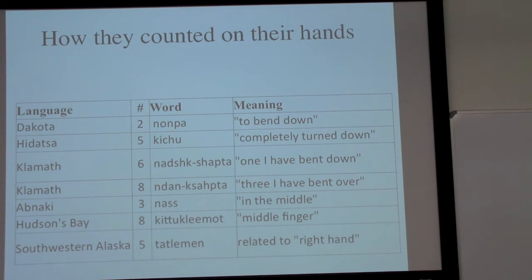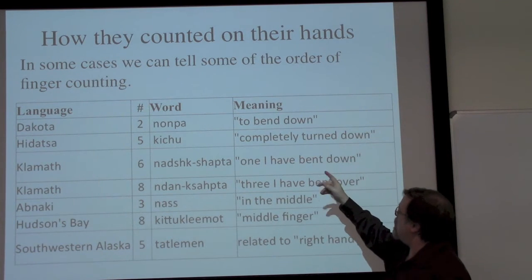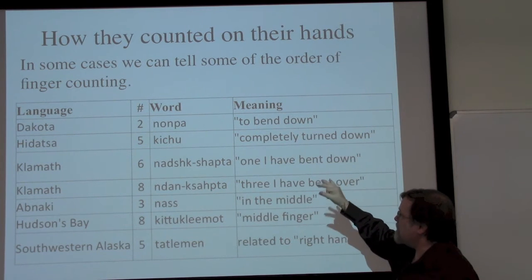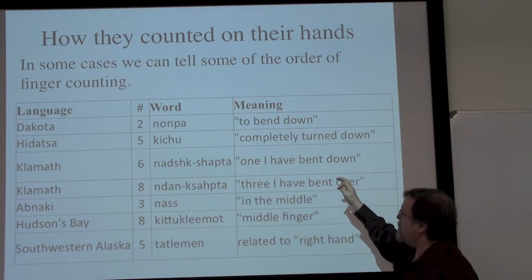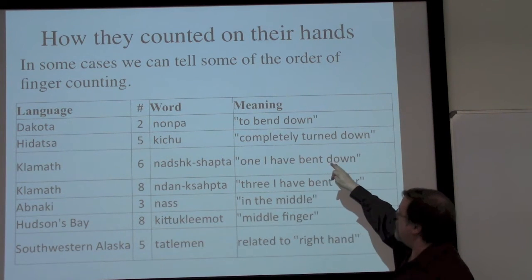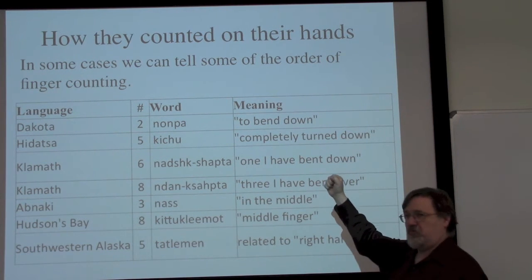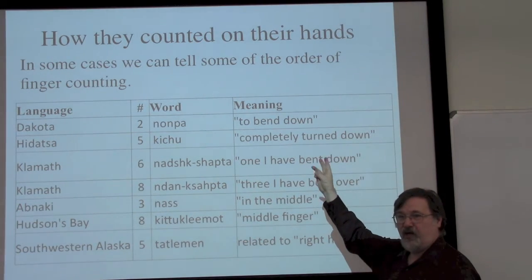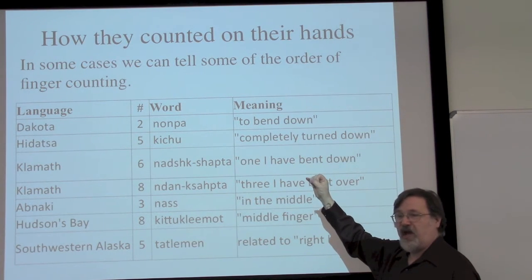In addition to basic body part words — which is where a lot of number counting comes from — we can tell something about the order of how they do their finger counting. In the Dakota language, 'two' means 'something has been bent down.' So the Dakota are almost certainly starting with an open hand and then counting by bending the fingers down. And the Hidatsa language: 'everything has been turned down' to get to the number five.